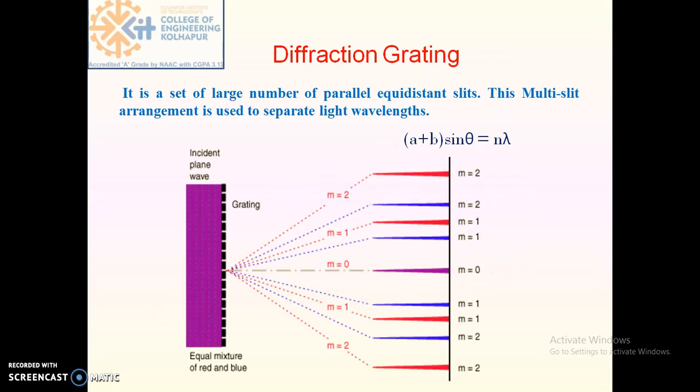Now similar to single slit, if we can arrange a large number of parallel and equidistant slits in the same plane, this set of large number of parallel equidistant slits is known as diffraction grating. This multi-slit arrangement is used to separate light wavelengths. The equation of diffraction grating is (a+b) sin θ = nλ. (a+b) is the constant of this diffraction grating.